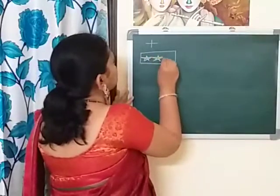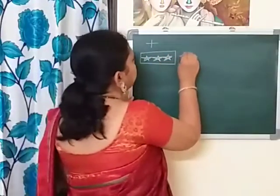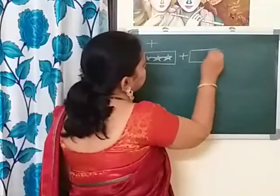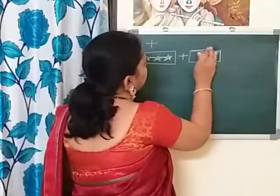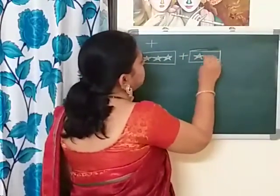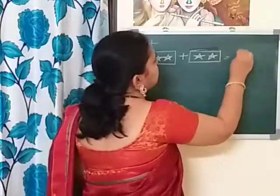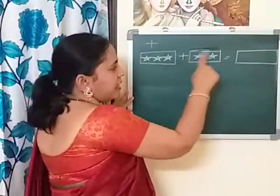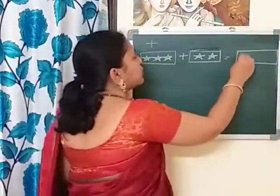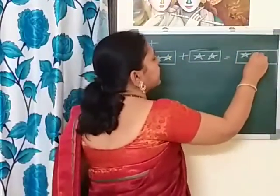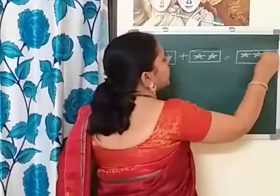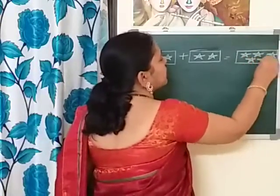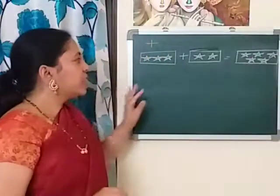In this box I have three stars, then I make one more box and put two stars in it. Now in the answer, first we have to put all these stars in a single box. So we will keep the first three stars here, and then from the second box we put two stars.